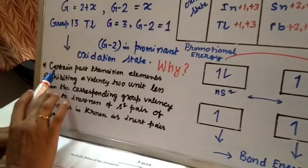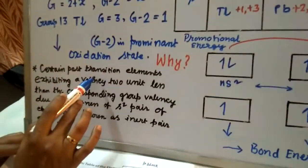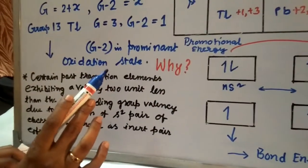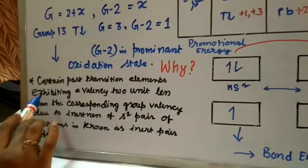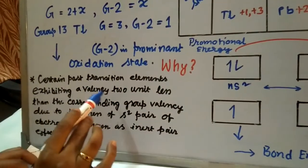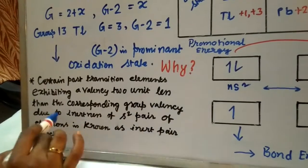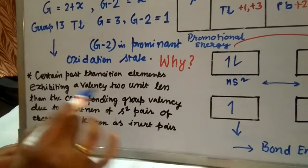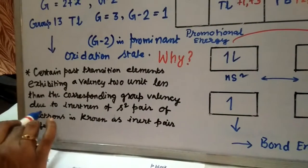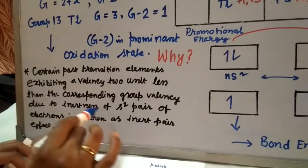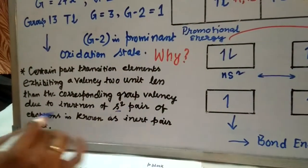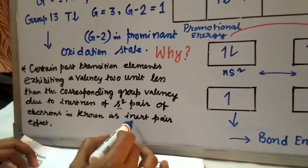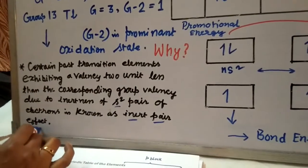Now I can state the definition of the inert pair effect. Certain post-transitional elements — those of groups 13, 14, 15, and 16 — exhibiting a valency 2 units less than the corresponding group valency, that is G minus 2, due to the inertness of the s² pair of electrons, is known as the inert pair effect.